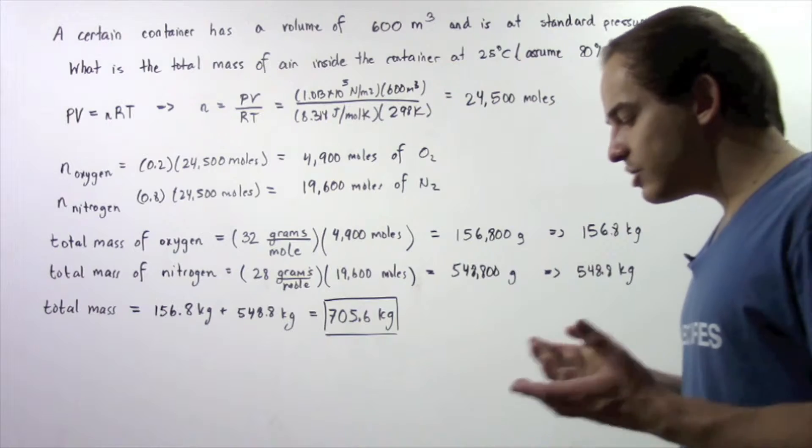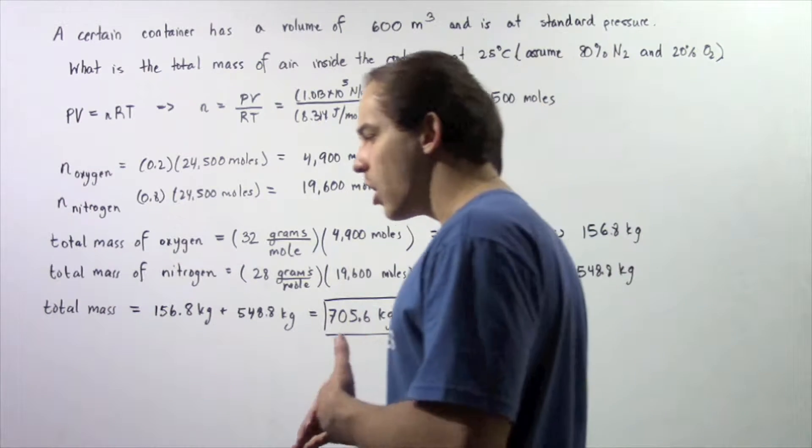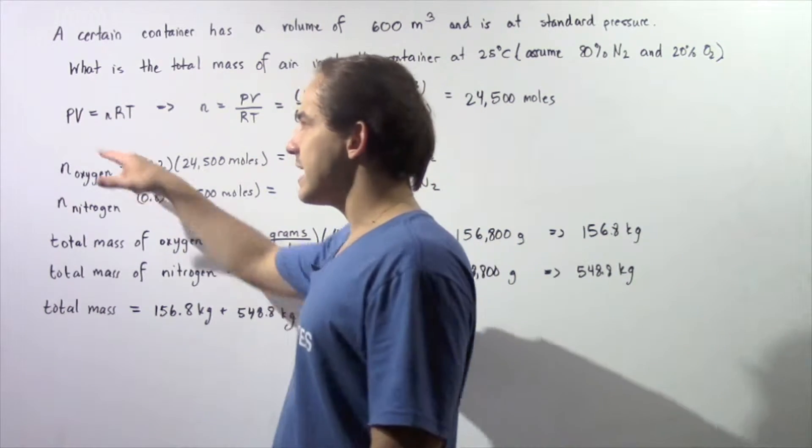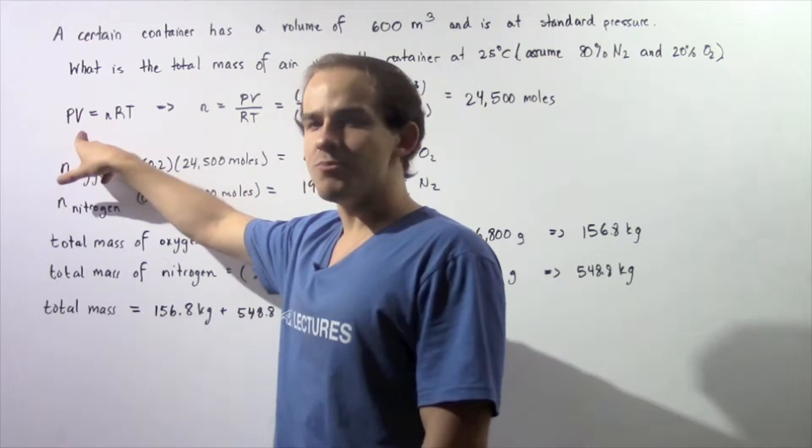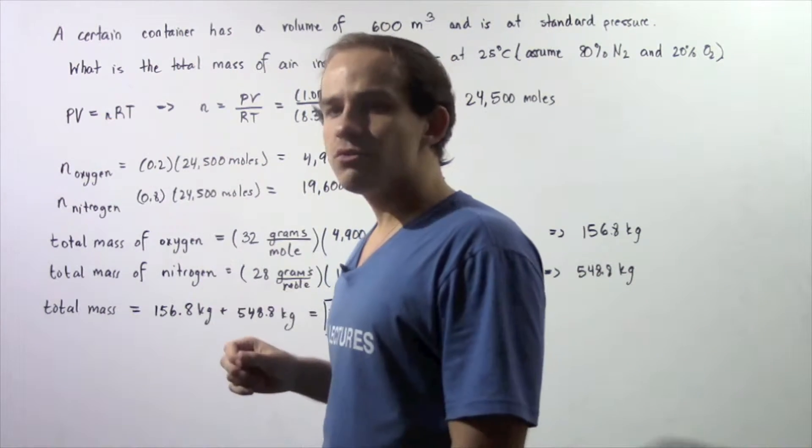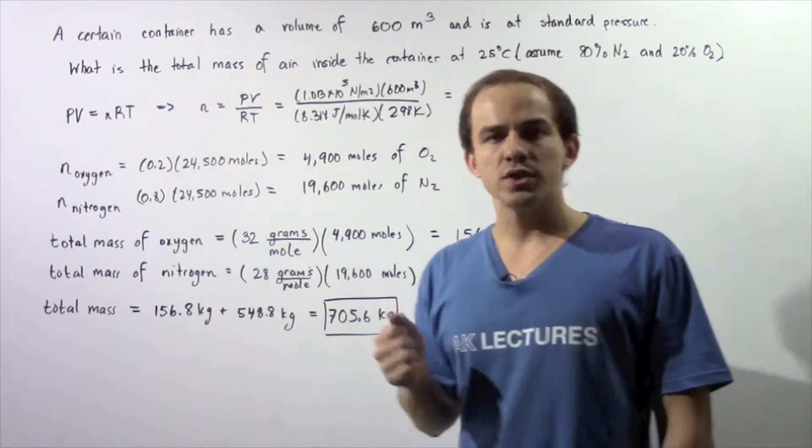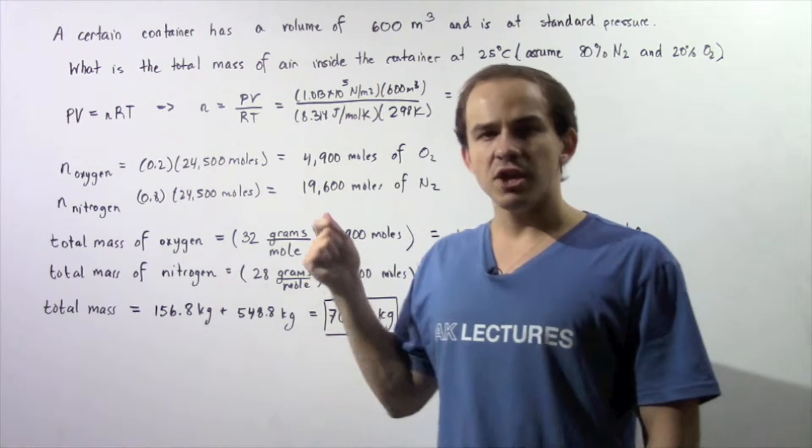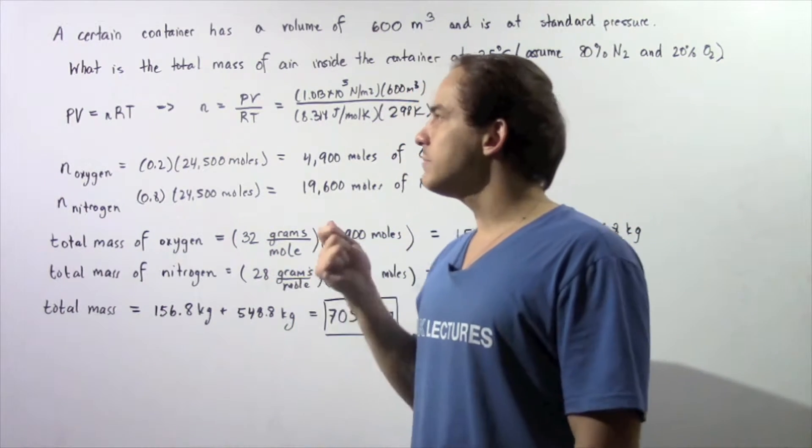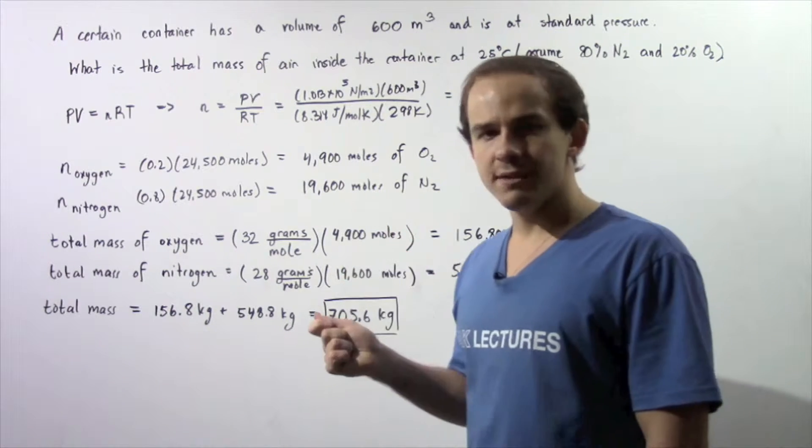So let's begin by using the ideal gas law. The ideal gas law states that pressure times volume of our container is equal to n, the number of moles of gas, multiplied by the universal gas constant R multiplied by temperature in Kelvin T.